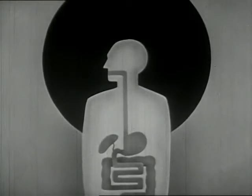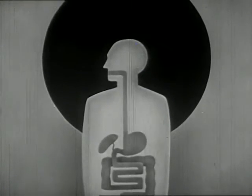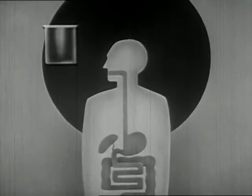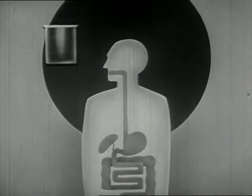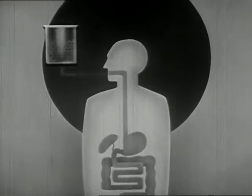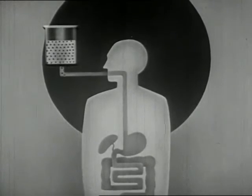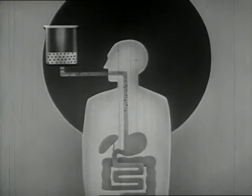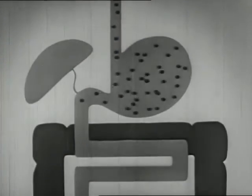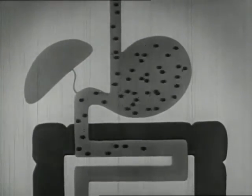By using animated drawings we will see what happens to alcohol in the body. In the alcoholic beverage shown here, the black dots represent the ethyl alcohol content. The alcohol travels down the esophagus and into the stomach and the small intestine.